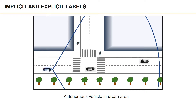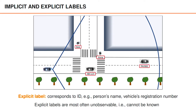Let's consider the example with an autonomous vehicle in an urban area. We have pedestrians and vehicles in the field of view. In this example, the explicit labels — in other words, the unique identity of the object — could for example be the person's name or the vehicle's registration number, as illustrated here. The challenge is that these explicit labels are most often unobservable by the sensors, which means that they cannot be known.